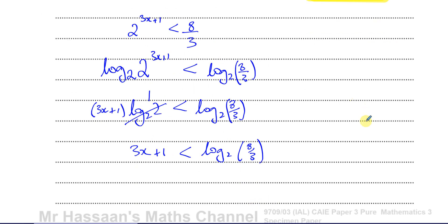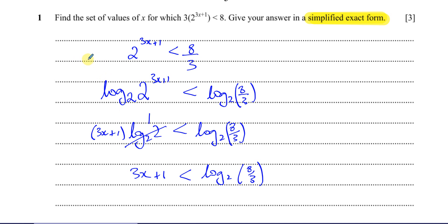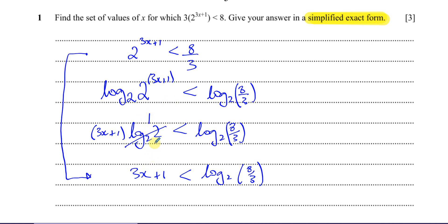Now we can solve this by rearranging. You can go straight from 2 to the power of 3x plus 1 to 3x plus 1, because taking log base 2 is the inverse of 2 to the power of something — they cancel each other out, leaving 3x plus 1. If you don't understand the power law, I have a video on the basics of logarithms and I'll put the link up.